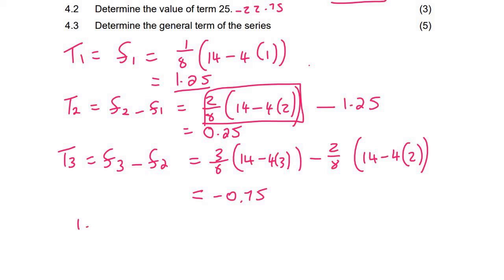And this is actually working out really nicely. We get negative 0.75. I didn't expect this. So term one is 1.25. Term two is 0.25. And term three is negative 0.75. So this is actually arithmetic. What we can see is that we are minusing one. See there? You're minus one. And then if you're minus one again, so this is arithmetic.